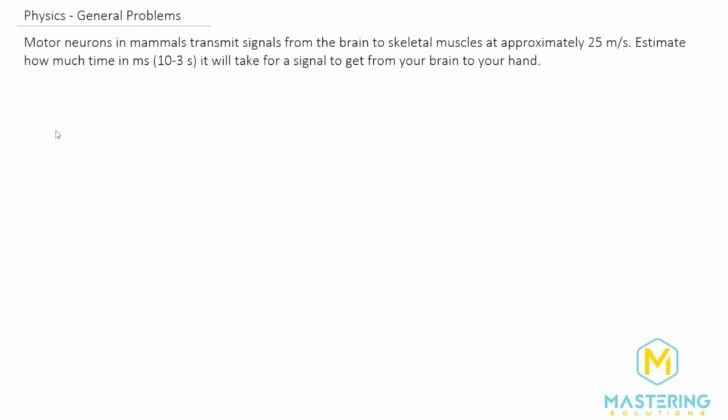To do that we have to figure out how far of a distance that is, and we're actually just going to estimate. I'm going to use the same estimation that the book used, which is one meter. So one meter is our delta x from the brain down to your hand.